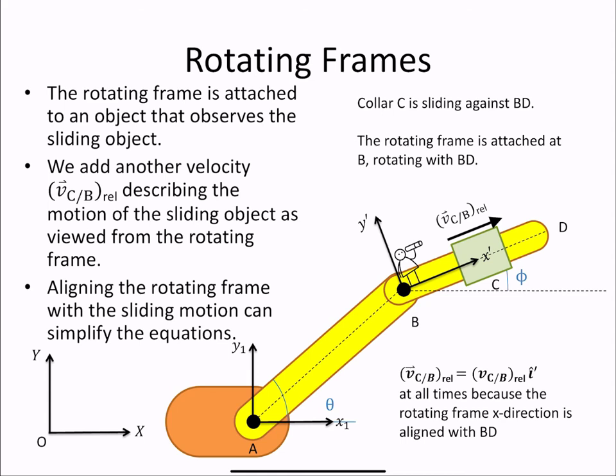We put the rotating frame attached to the object that observes the sliding object. And we add another velocity, the velocity v of C with respect to B relative, describing the motion of the sliding object as viewed from the rotating frame.